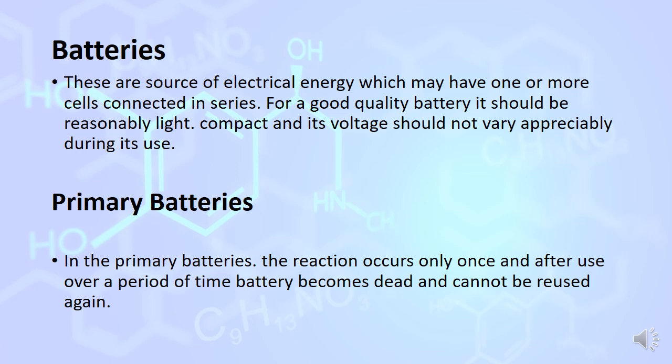Batteries which we use daily in our life are a good source of electrical energy and may have one or more cells connected in series. For a good quality battery, it should be compact, its voltage should not vary appreciably, and it should be light in weight. Batteries are of two types: primary batteries and secondary batteries. Primary batteries cannot be reversed back. Reaction occurs only once. After use over a period of time, the battery becomes dead and cannot be reused again.